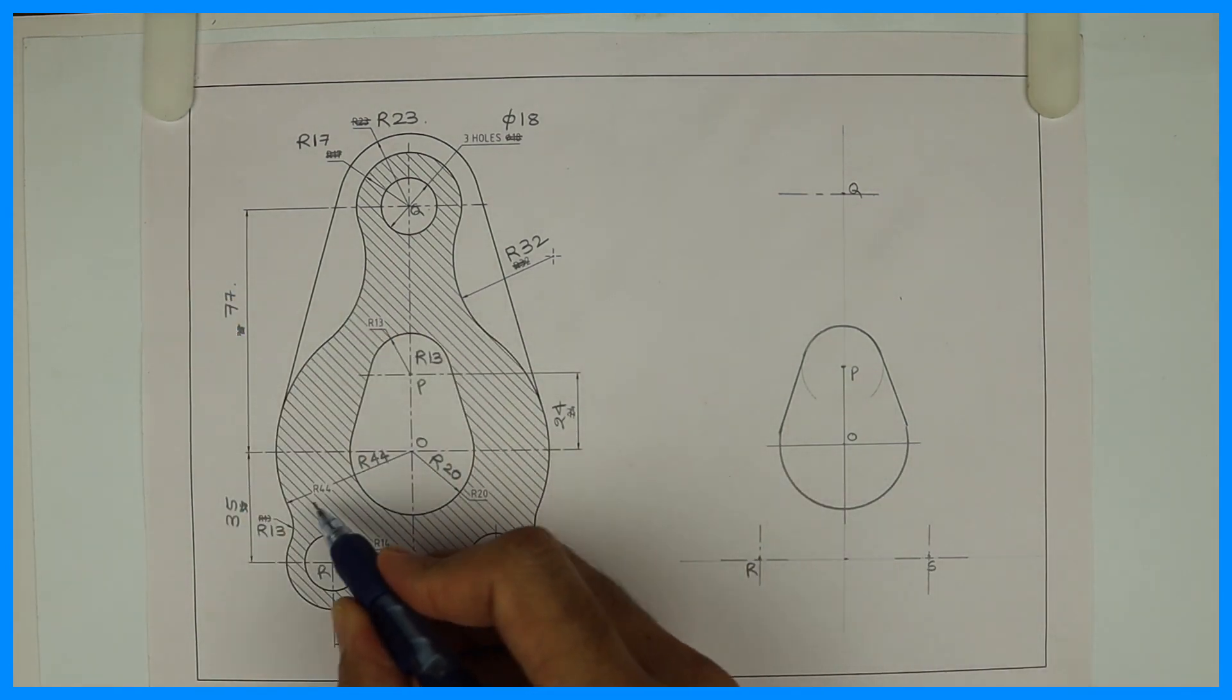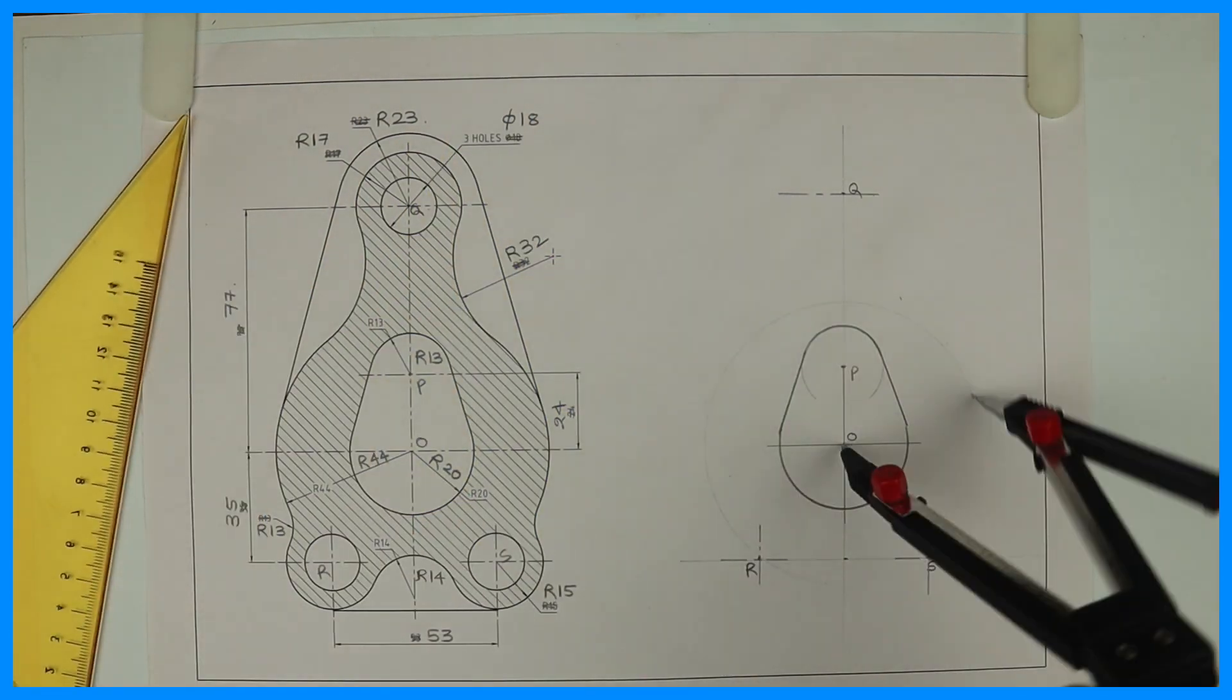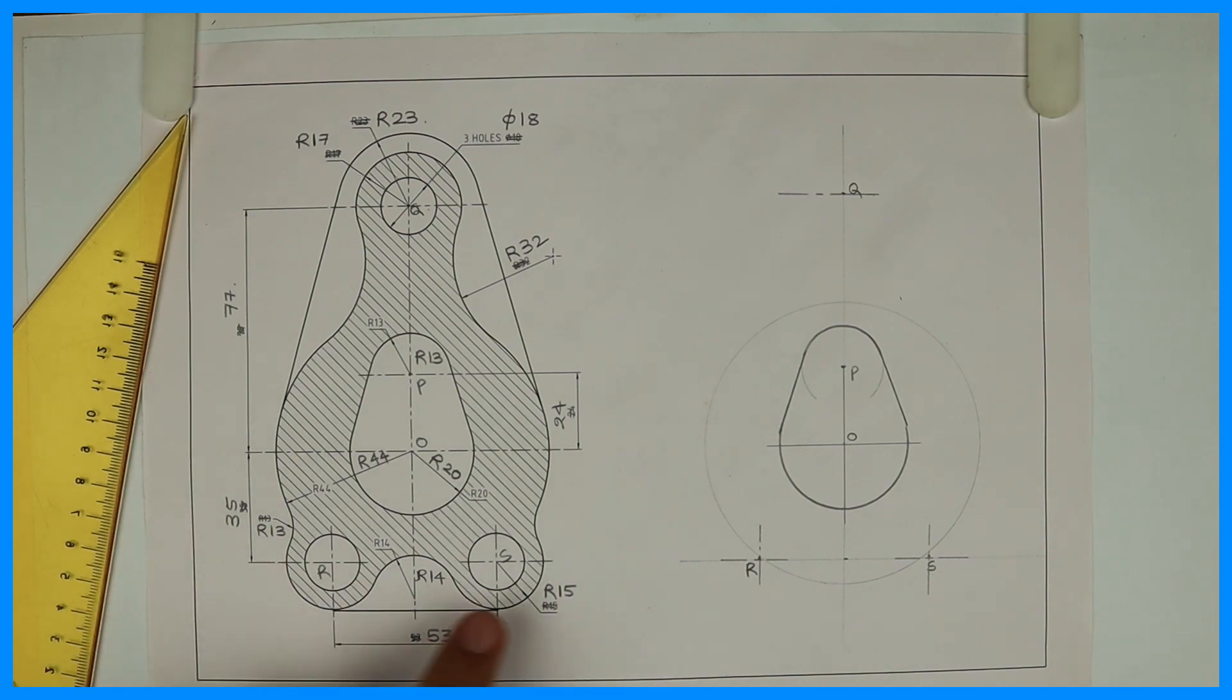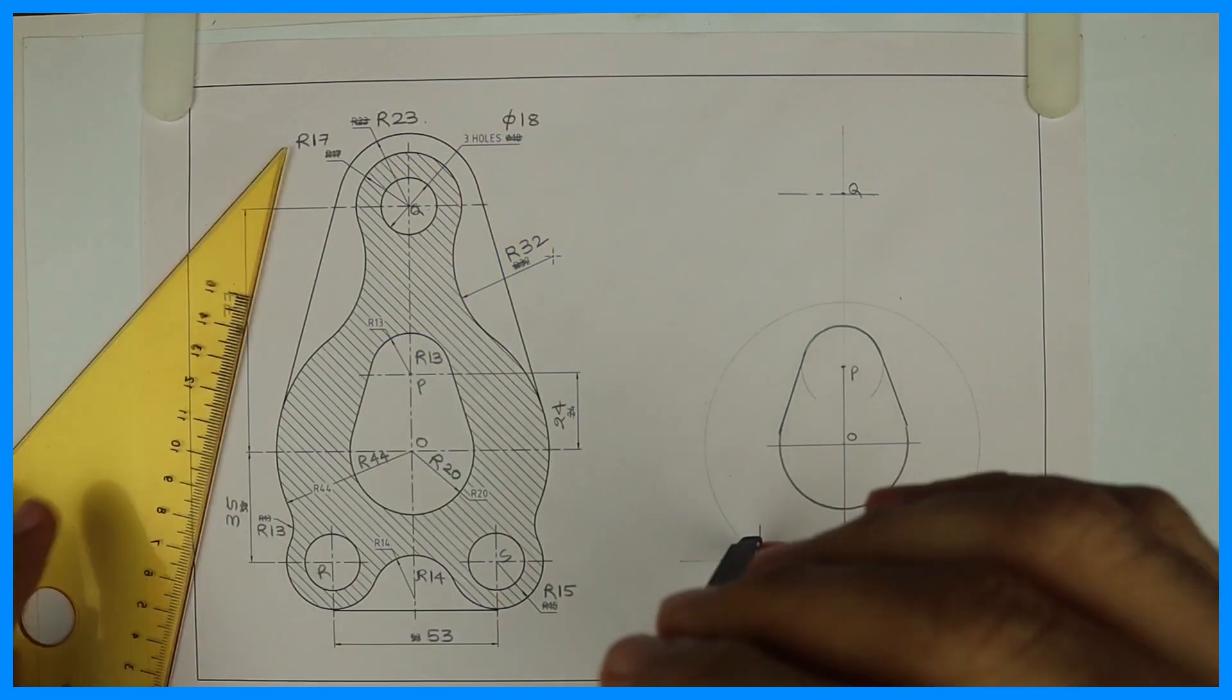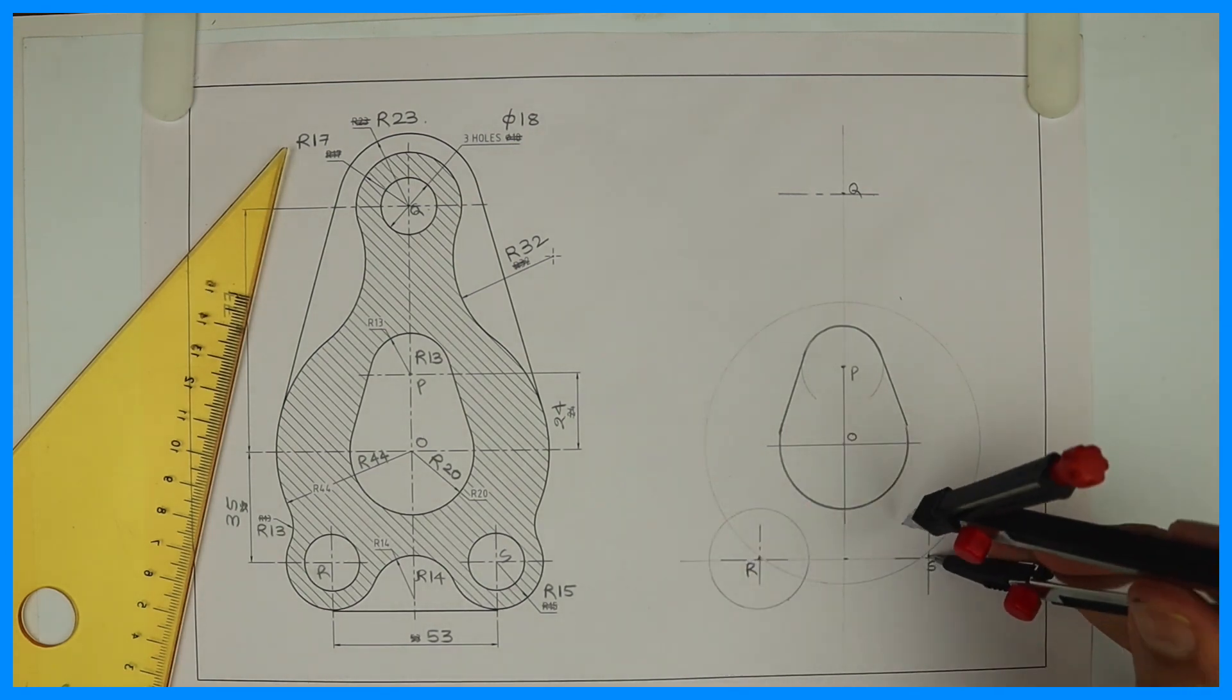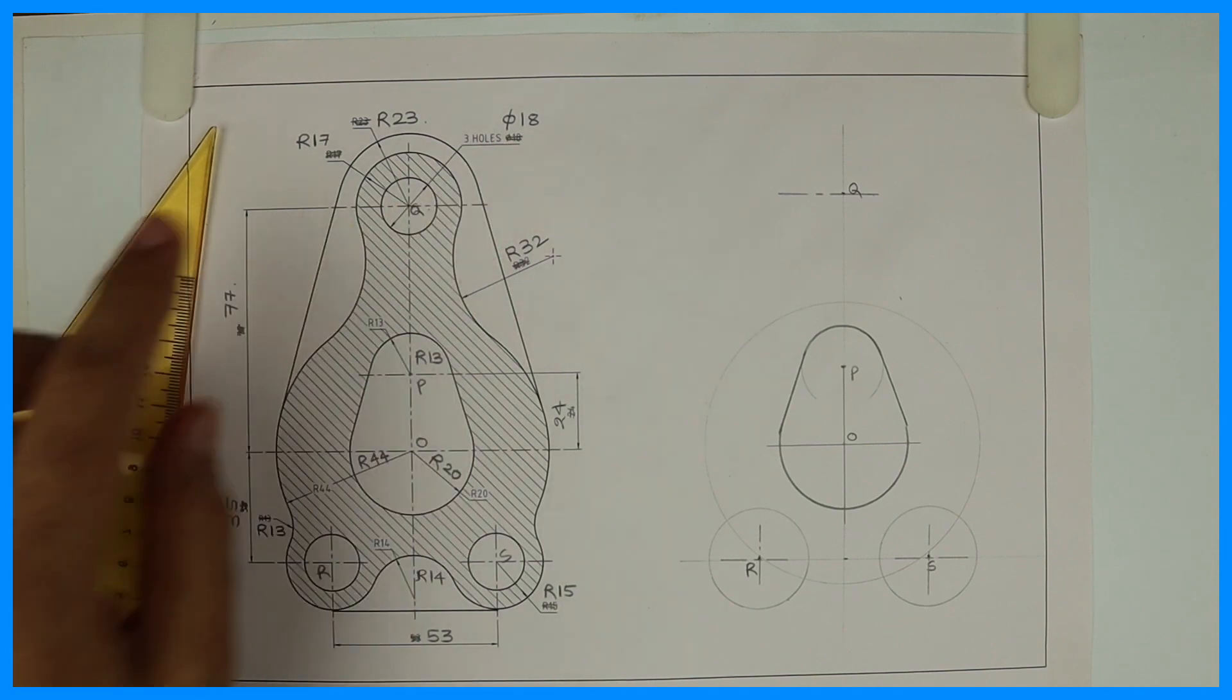After that is radius 44. See this. This is radius 15 from R and S. Then we have this radius.